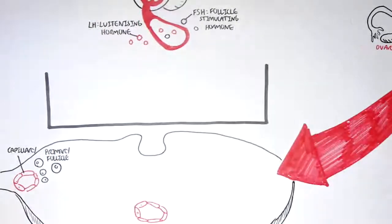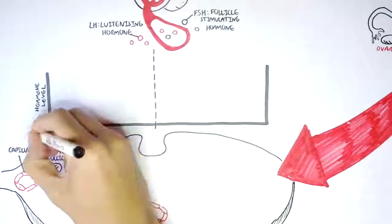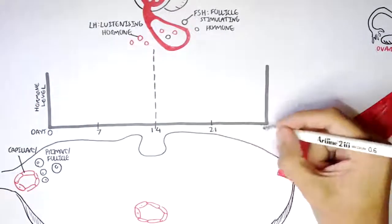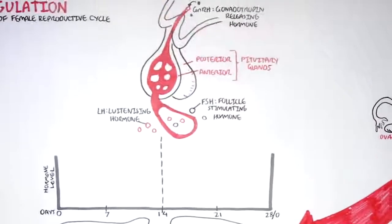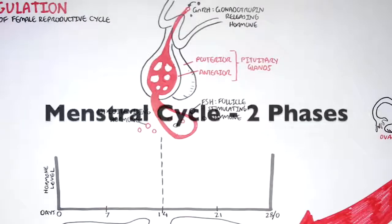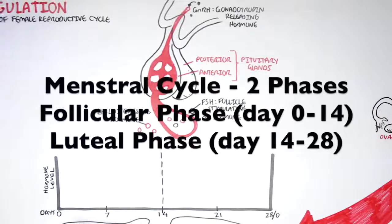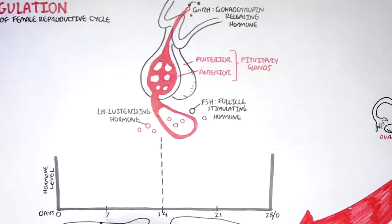Let's look at the changes in hormone concentrations from the brain by looking at a graph. The y-axis shows the concentration of hormones in the blood, and the x-axis shows the duration of the female menstrual cycle, which normally goes for about 28 days. The dotted line in the middle is 14 days — halfway. The menstrual cycle can be divided into two phases: the first 14 days is the follicular phase, and the last 14 days is the luteal phase.